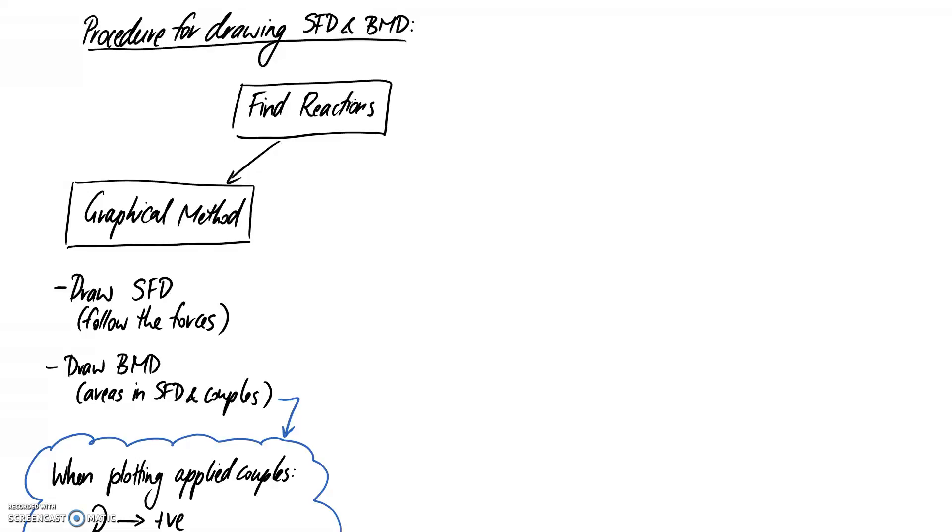Once you've done that, you've got a choice of two different methods, and the first one we're going to look at is the graphical method. This one tends to be easier when you have very simple loads on your beam or your structure.